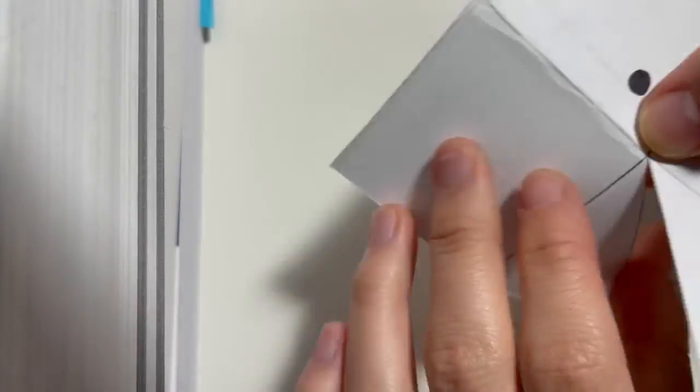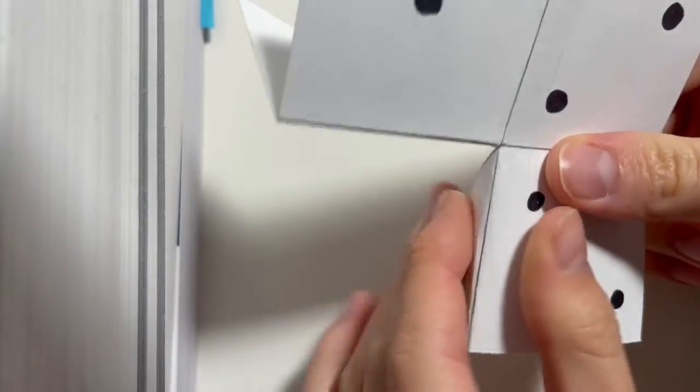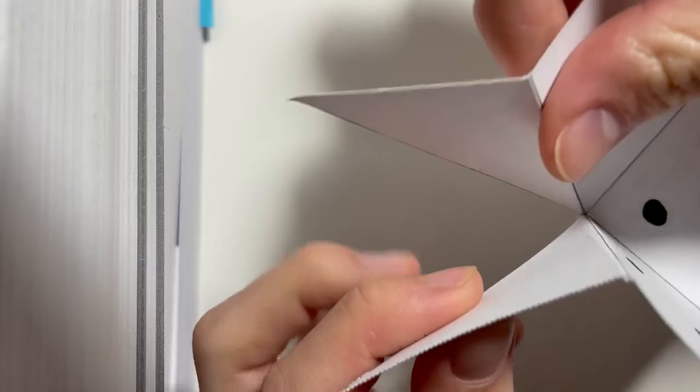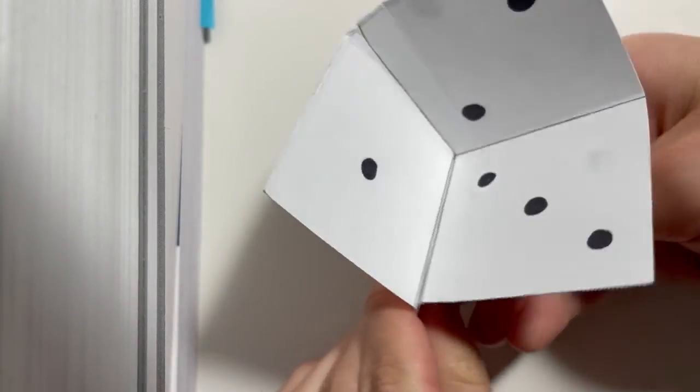Now we're going to fold this the other way, so go ahead and fold them back so that it looks like this, and then you're going to turn it over and connect them like so. And you'll see that you have an illusion dice.